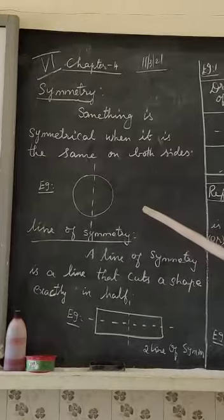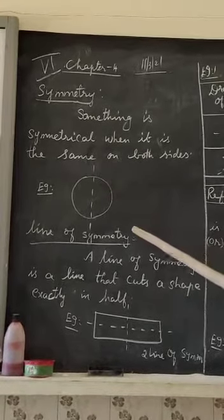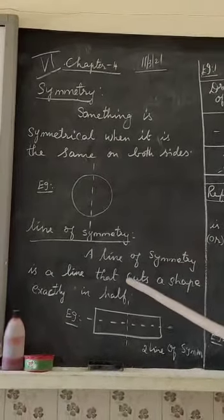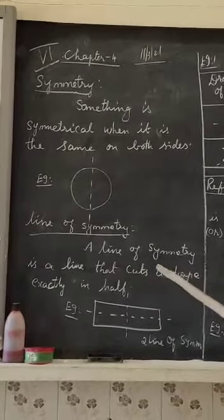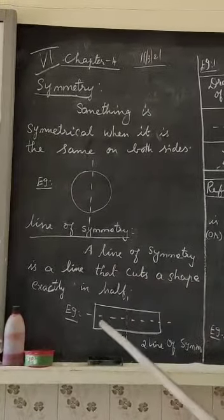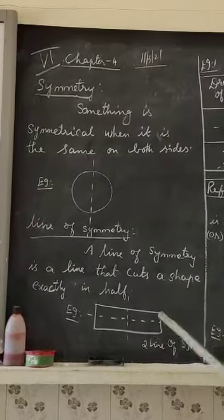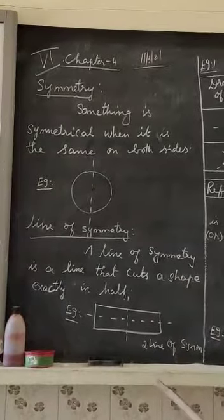This is called symmetry. You already studied this in 5th standard, so just go through it. The second topic is the line of symmetry. A line of symmetry is a line that cuts the shape exactly in half. See the example.